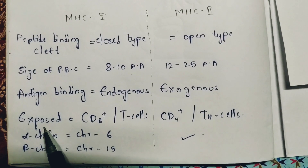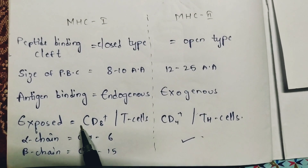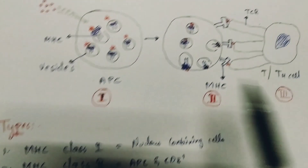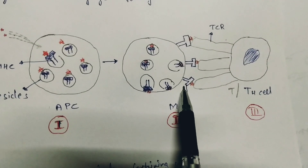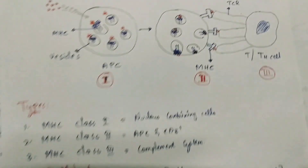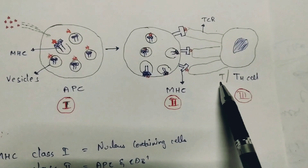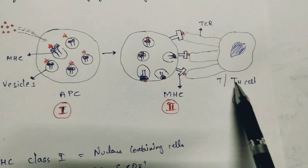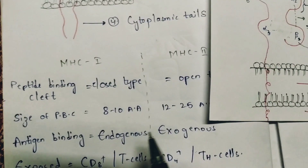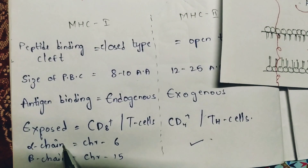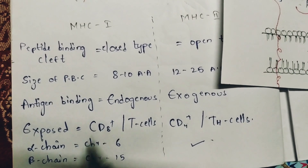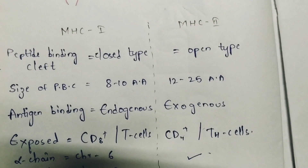MHC class 1 molecule is exposed when CD8+ T cells are present and binds to T cells. MHC class 2 molecule binds to T helper cells. T cells release CD8+ T cell receptors, and T helper cells release CD4+ T cell receptors.